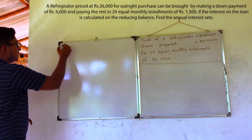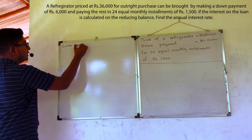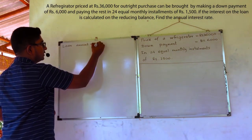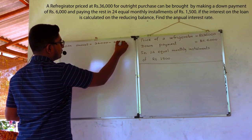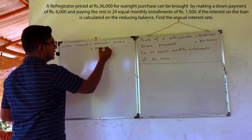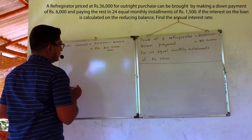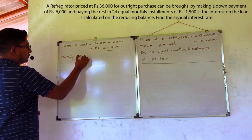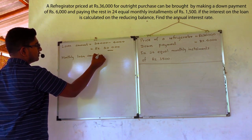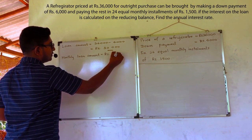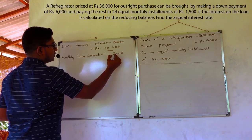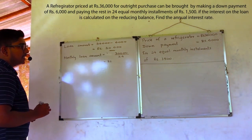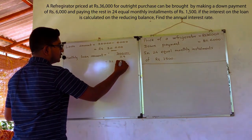First, as in the previous example, we have to calculate the loan amount. The loan amount is the difference between the price and the down payment. When we divide 30,000 by the number of months, we will get 1250.